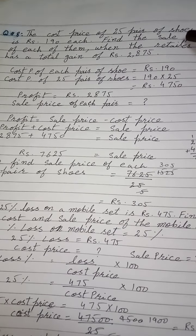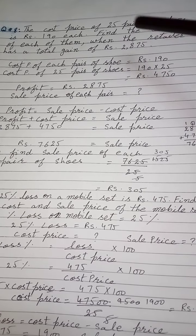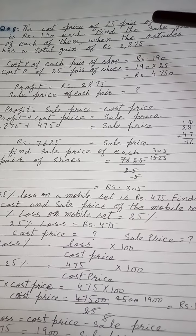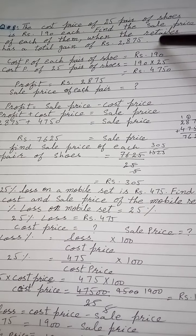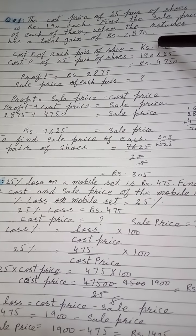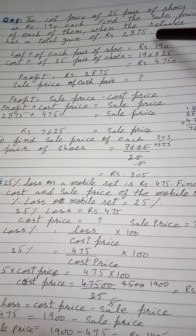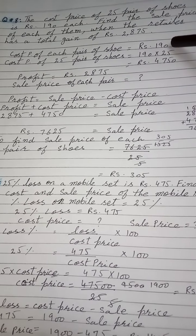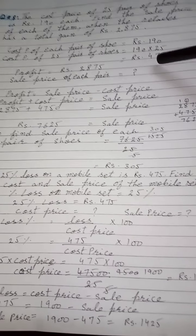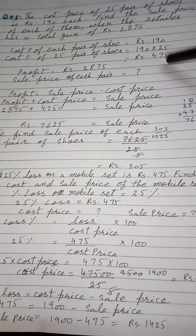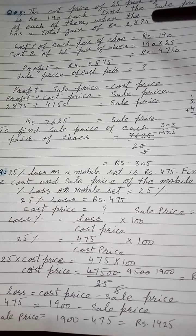Question number 8: cost price of 25 pairs of shoes is rupees 190 each. Find the sale price of each when the retailer had a total gain of rupees 2875. Cost price each pair 190، 25 pairs تھے تو پہلے 190 کو 25 سے multiply کیا تو 4750 نکلے جو 25 pairs کی cost price تھی۔ Profit given ہے 2875، sale price بتانی ہے۔